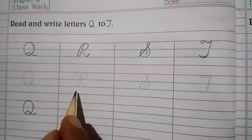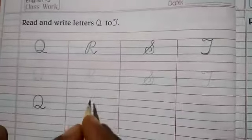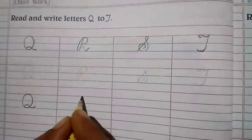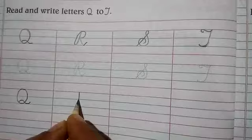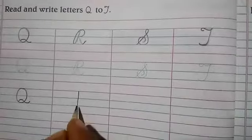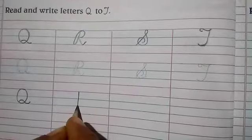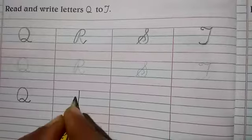Next is R. So how will you write letter R? Make a straight line from the top red line to third line. Again go back from the third line to top red line.